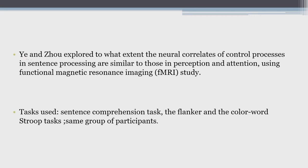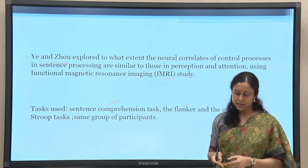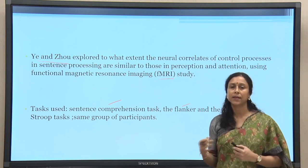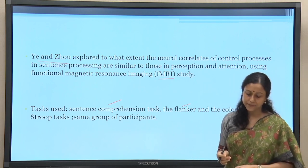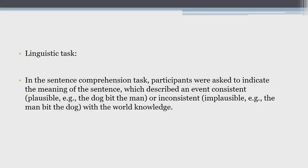This study by A and Zou explored to what extent the neural correlates of control processes in sentence processing are similar to those in perception and attention. They used an fMRI study along with a behavioral study. In the behavioral task, they had a sentence comprehension task, a flanker task, and a color-word Stroop task. The color-word Stroop task and the flanker task are both designed to look at conflict resolution mechanisms, while the sentence comprehension task is the linguistic task, allowing comparison between linguistic and non-linguistic tasks. The tasks were carried out on the same group of participants.